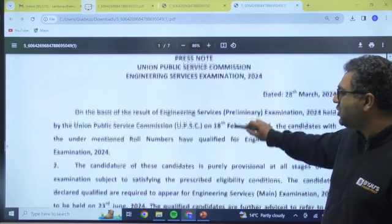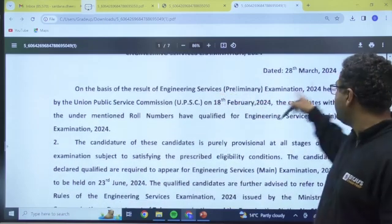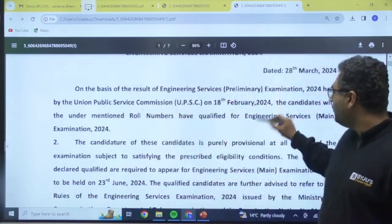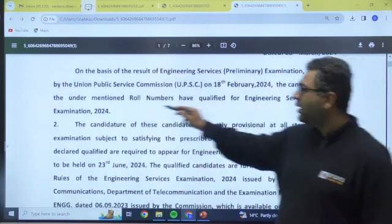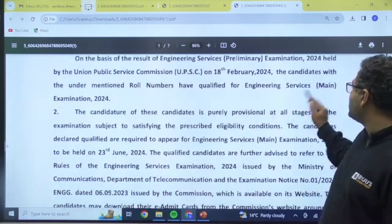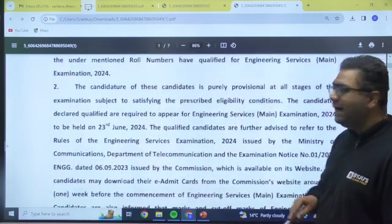This is the Press Information Bureau, Government of India. On the basis of the result of Engineering Services Prelims Examination by the UPSC on 18th of February, the candidates with the under-mentioned roll numbers have qualified for Engineering Services main paper.